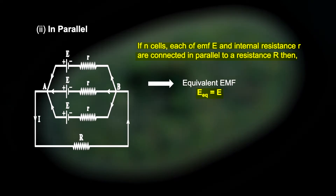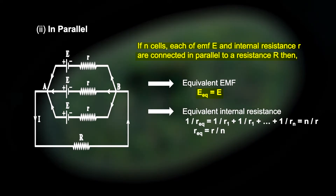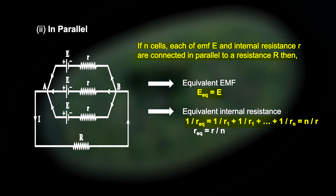Now our equivalent resistance: when resistors are in parallel, the inverse of the equivalent resistance equals the sum of inverses of individual resistances. So 1/R_eq = 1/R1 + 1/R2 + ... up to 1/Rn. Since all resistances are the same, this gives N/r, so R_equivalent = r/N. This gives us the total internal resistance.